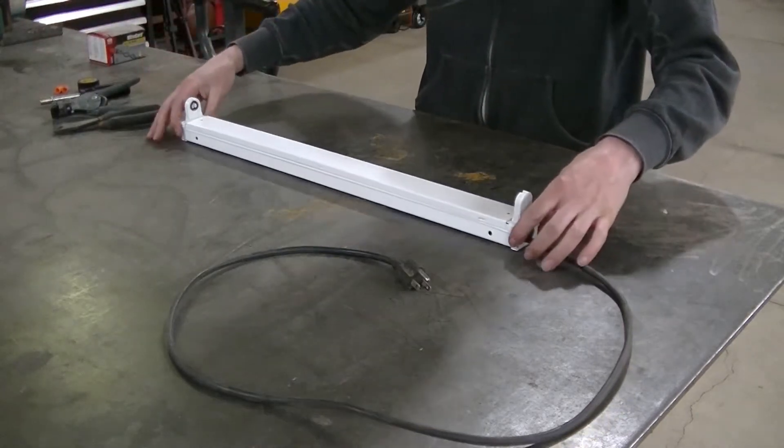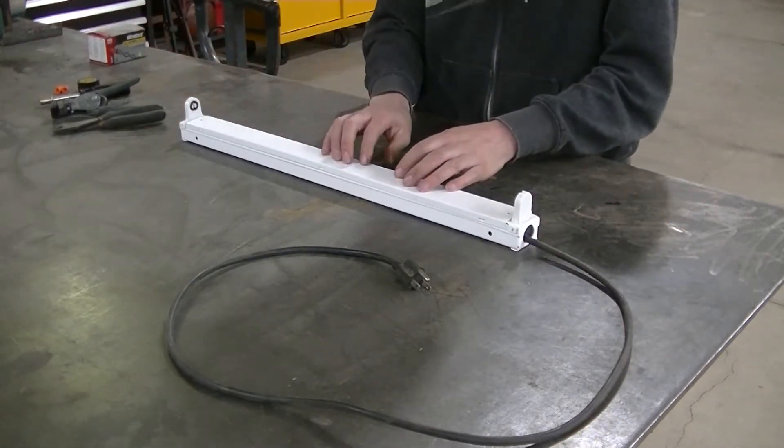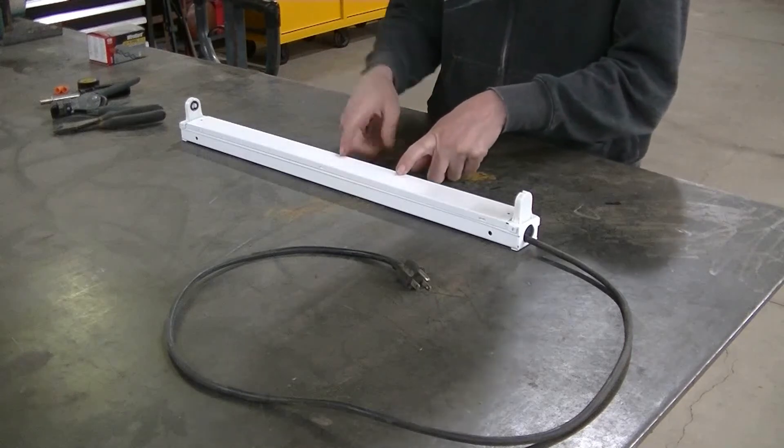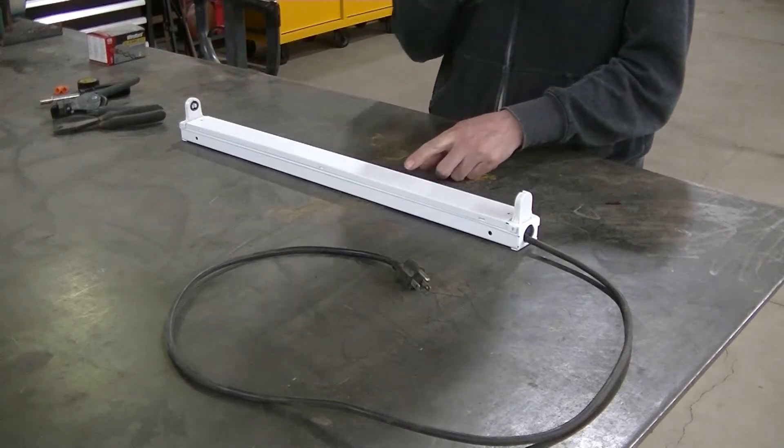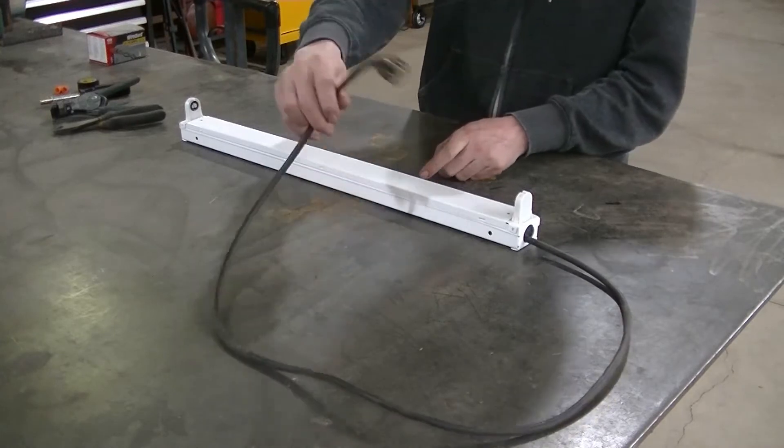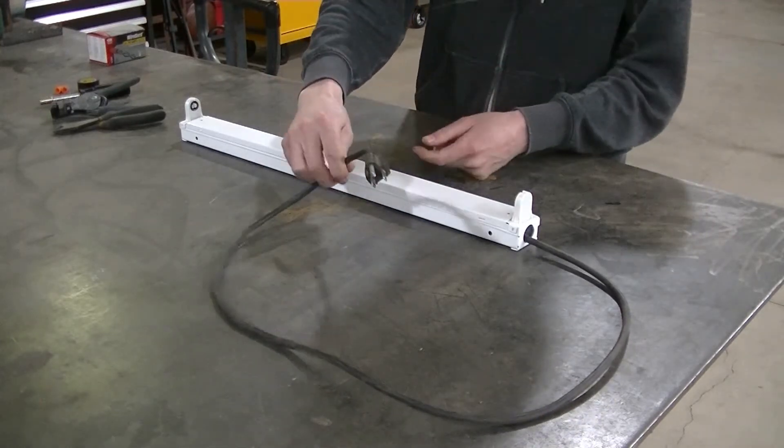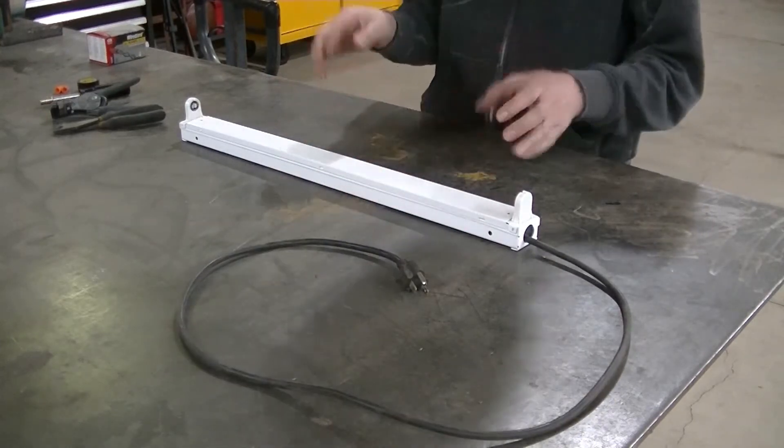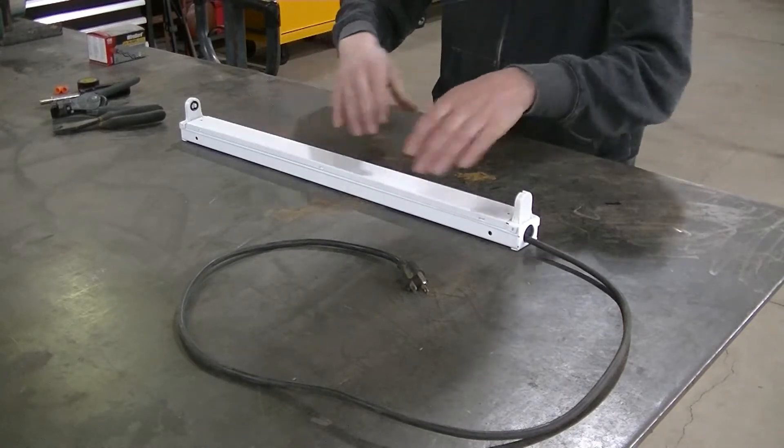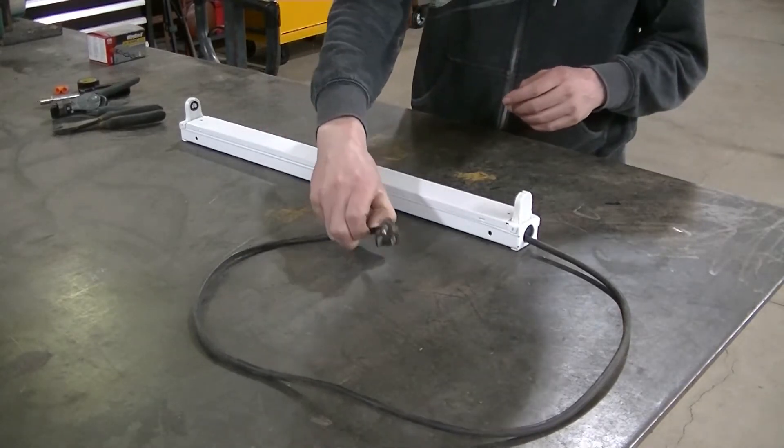So anyway, let's get to tearing the light apart. You are going to have to go in here and take the ballast out to be able to run those LED lights. First thing you are going to do is unhook the light from power. You do not want that plugged in. If it's wired in, you have to unhook it.